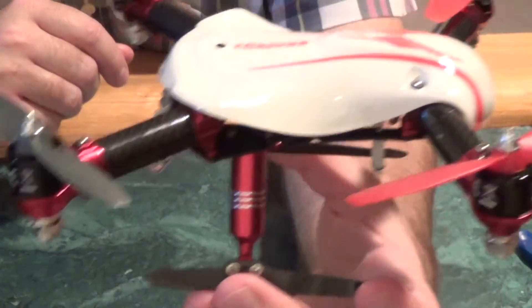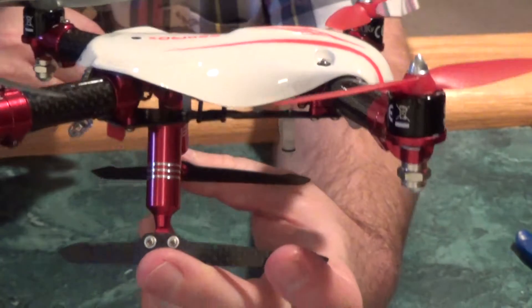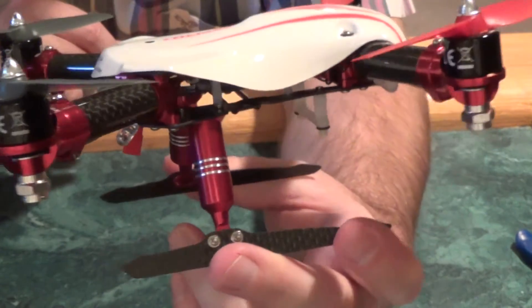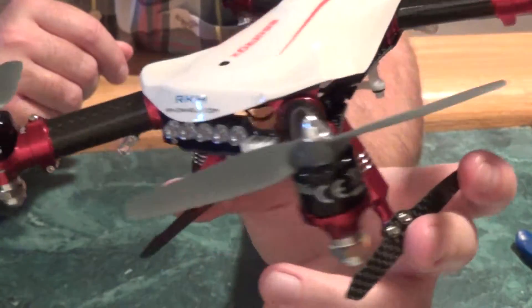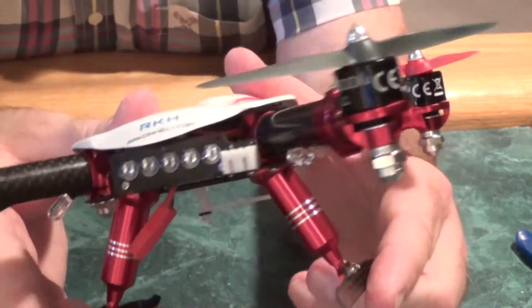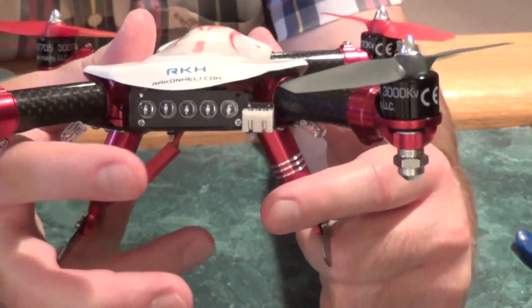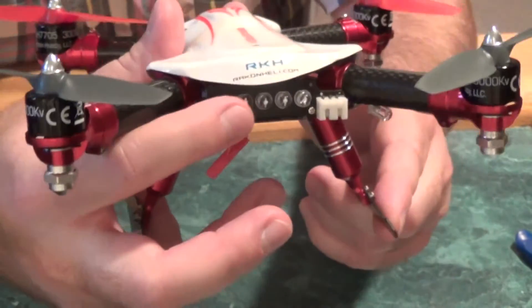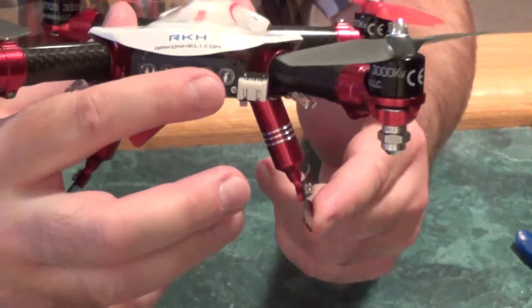So that's my 200QX with the upgraded Rackon Heli frame. Oh, I almost forgot. It's a new addition on the Rackon Heli site. This is light bar back here.